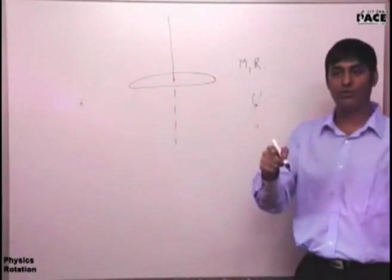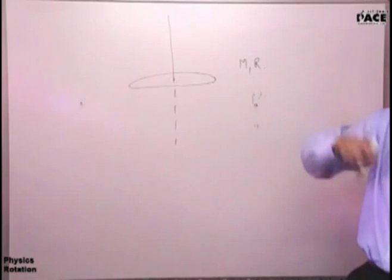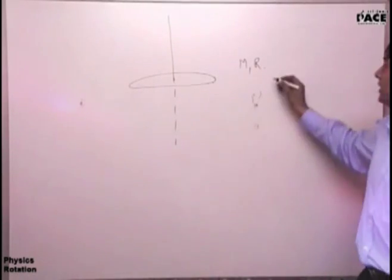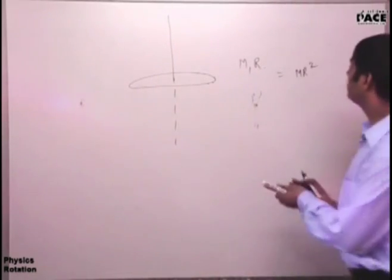So m1 r squared, m2 r squared, dm r squared integrate. Dm will be integrated. This moment of inertia is mr squared.